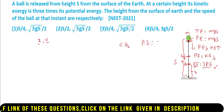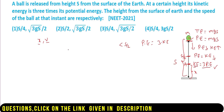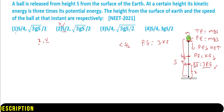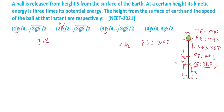Looking at the options, the second option gives distance s/2, which is not possible. For the remaining options 1, 3, and 4, the value of x is s/4, which is common. Since s/4 < s/2, the condition KE = 3×PE is satisfied at x = s/4. So we have the value of x.